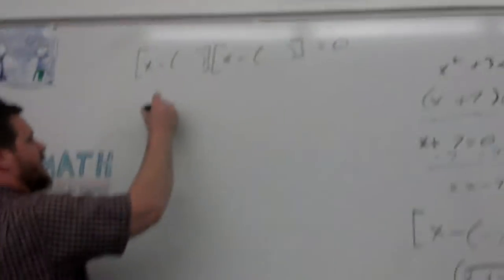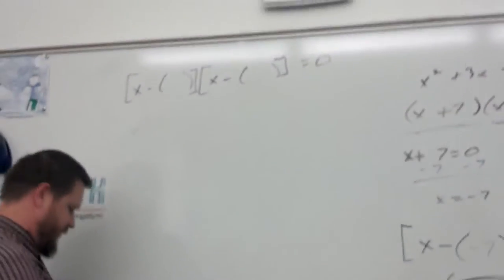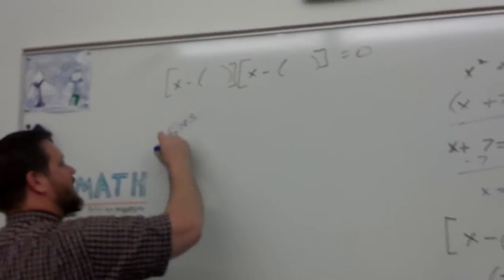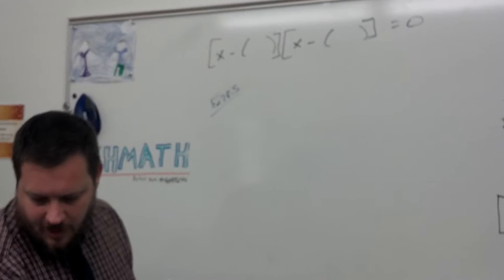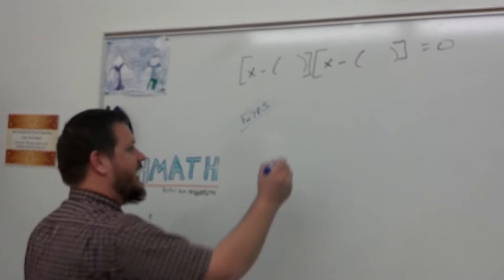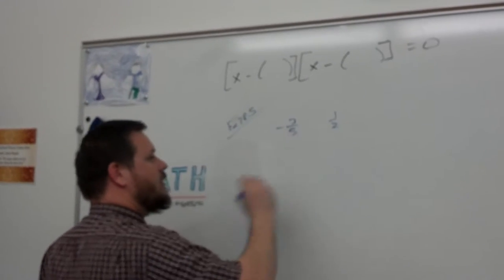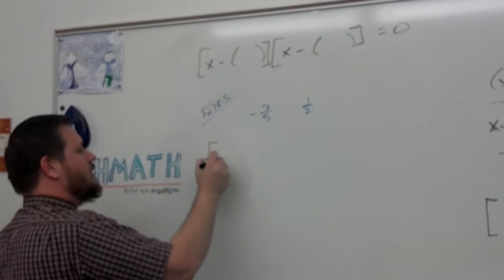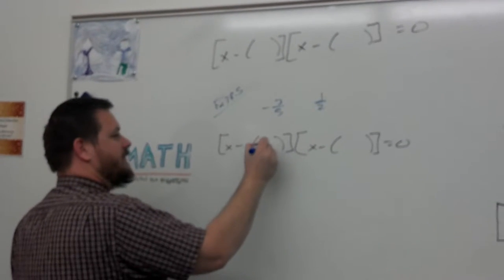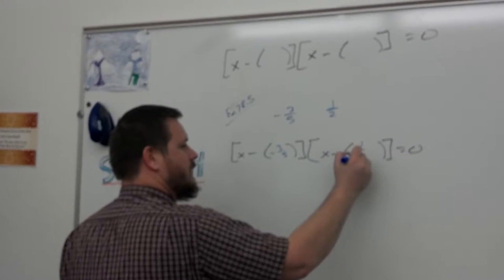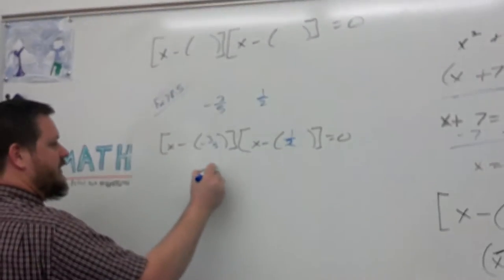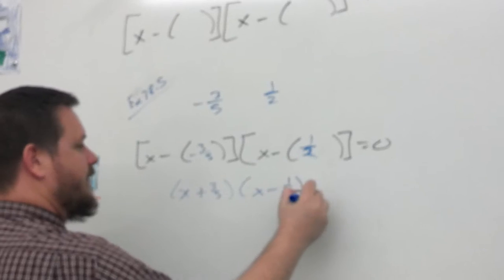Let's say that this is example 38.5. Example 38.5. It says, write the quadratic equation with a lead coefficient of one, whose roots are negative three-fifths and one-half. All you've got to do is plug it in to this. Negative three-fifths, one-half, and distribute and multiply it out.